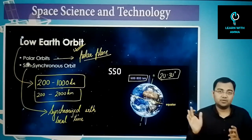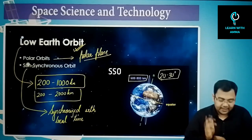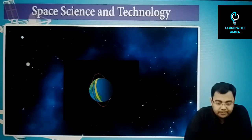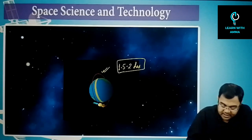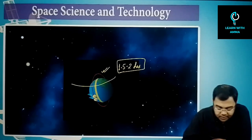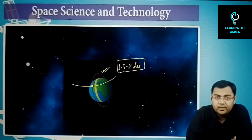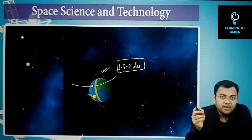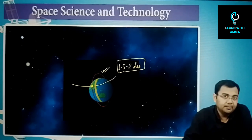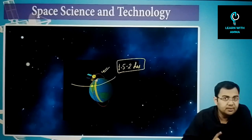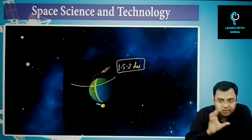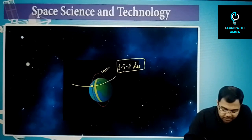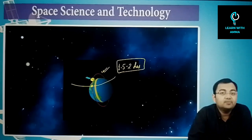For a sun-synchronous satellite, we sync it with the local solar time. The satellite revolves and takes approximately 1.5 to 2 hours for one revolution. When it returns to the same latitude, the earth has rotated, so it passes over a different region — but at the same local solar time each day.